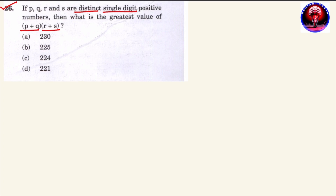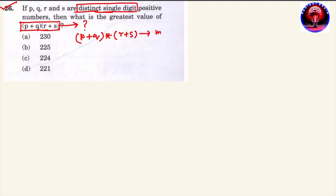P, Q, R और S different single digit positive numbers दिए हुए हैं। और इनसे एक algebraic expression (P + Q) × (R + S) बनाया गया है, जिसकी maximum value find करनी है। इस type के questions में, जैसा कि पिछले questions में भी देखा था, जब हमें digits find करना होता था तब 0 to 9 numbers लेते थे।